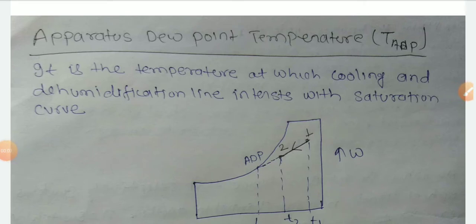Hello friends, today I am going to explain apparatus dew point temperature. So what is this? It is the temperature at which the cooling and dehumidification line intersects with the saturation curve.